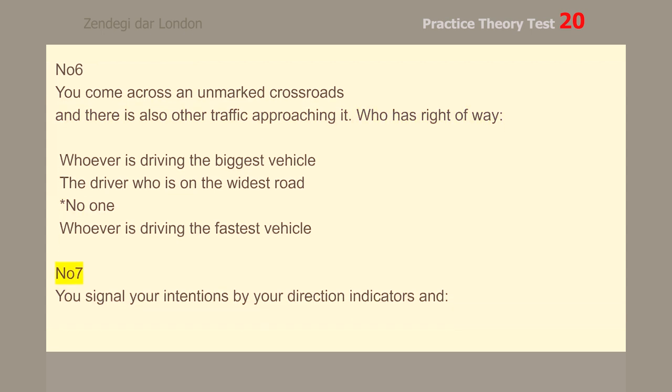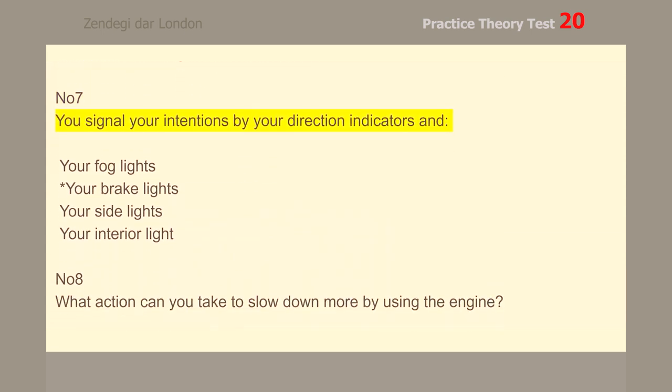Number 7. You signal your intentions by your direction indicators and your brake lights.